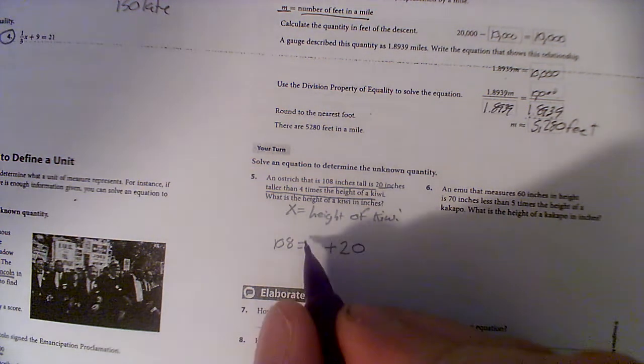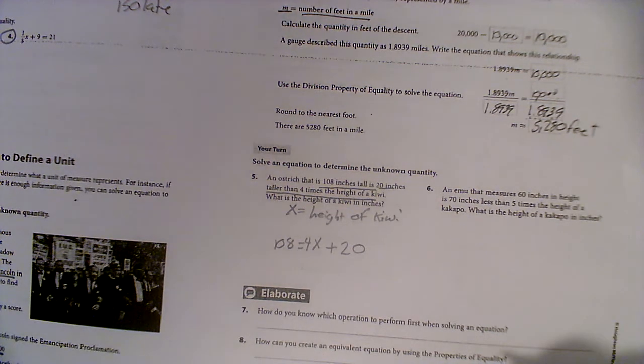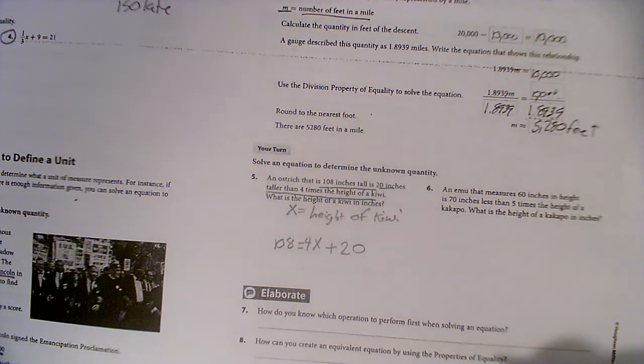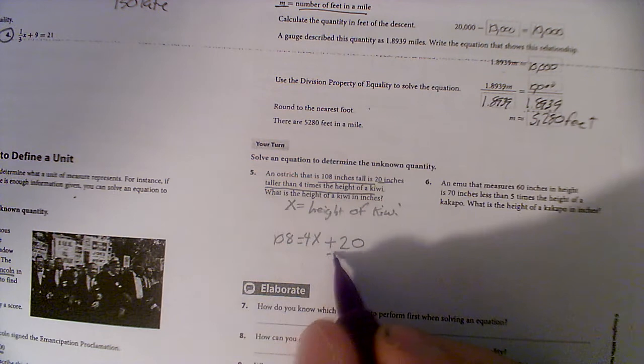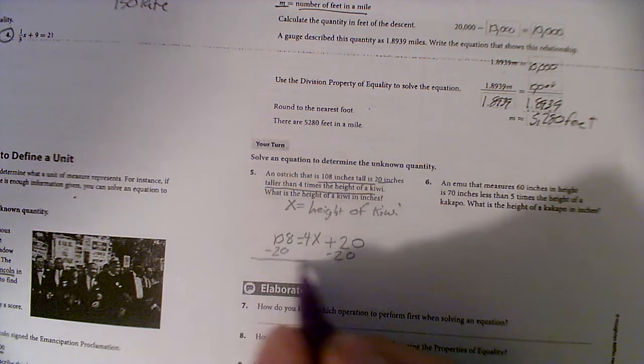All right, so look, the 108 inch tall ostrich - watch how we write this - is 20 more than four times the kiwi. That's literally how you set that up: 20 more than four times the kiwi. So we're going to subtract 20 from both sides.